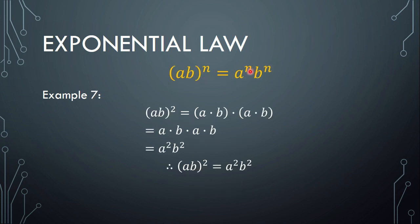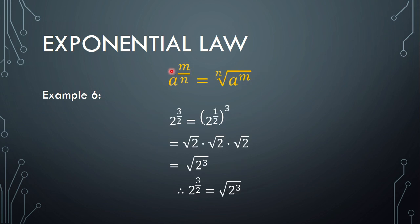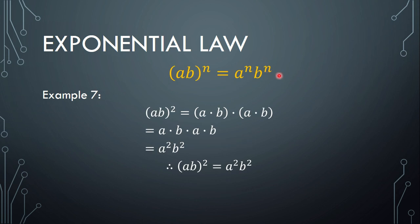Exponential law number 7. Previously we only had one base, which is a. Now we are going to consider 2 bases. If we have two bases a and b, then (ab) to the power of n is the same as a to the power of n multiplied by b to the power of n. We can distribute the power n to both a and b.